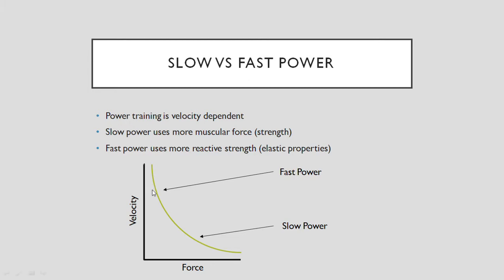Power training can be velocity dependent, so we can work on slow power and fast power. Slow power sits in the area of the force-velocity curve where force is higher and velocity is slightly lower, but not at the maximal strength end. Fast power is more on the higher velocity side with lower force. The key distinction is that the slower the power, the more muscular force contributes to the movement — so it's more strength-based. The faster type power exercises are more reliant on reactive strength and the elastic properties of the tissue, involving more stretch shortening cycle and elastic tendon involvement.